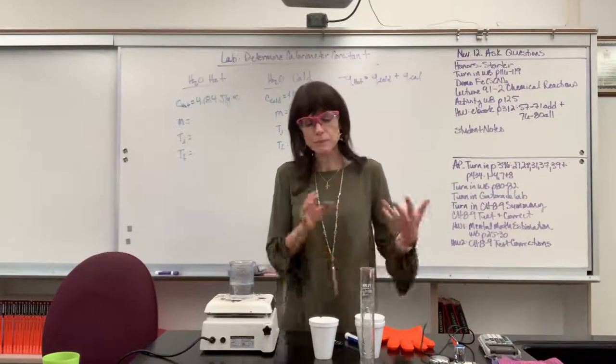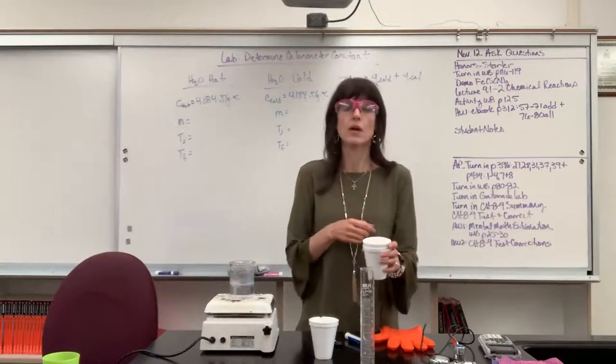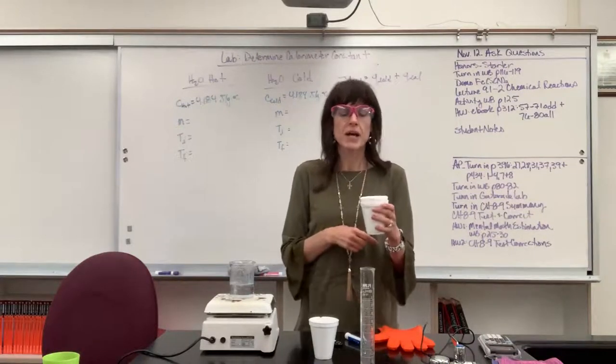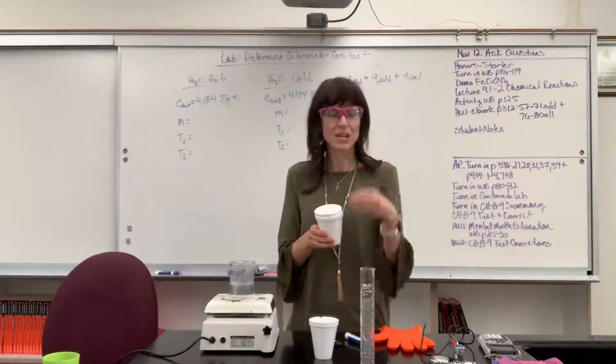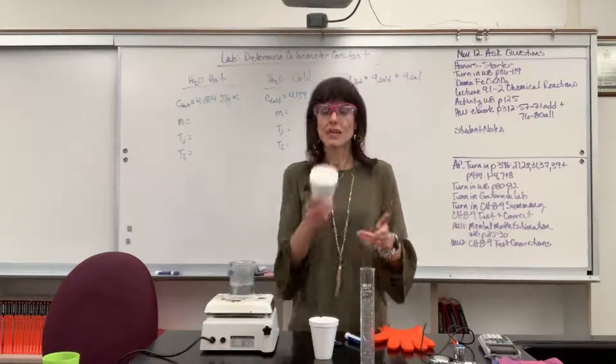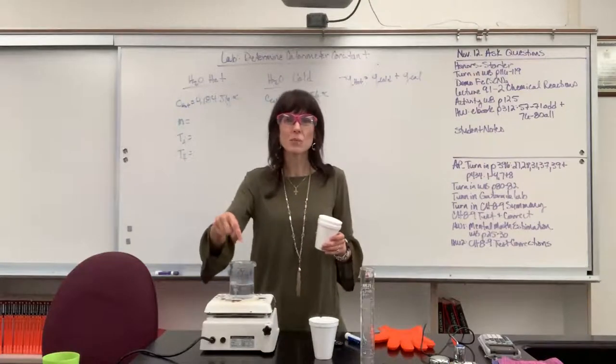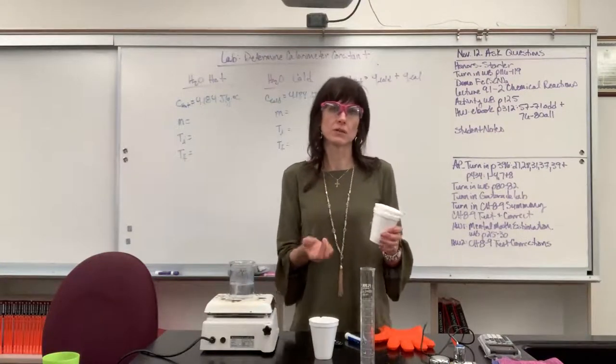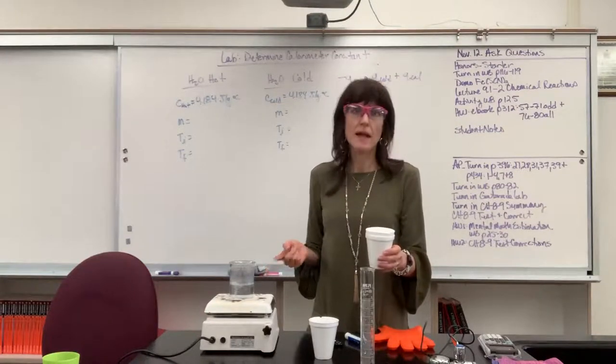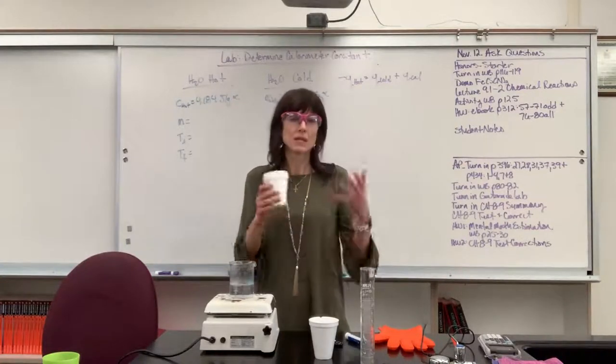So you're going to go into the lab and you'll be determining like the heat of solution. You'll be putting a salt into water. Or you're going to be determining the specific heat of a metal. You'll put a hot metal into the cold water. But in order to have accurate data, you need to first find the calorimeter constant. Now, another honest truth, it doesn't matter when you're in the lab, when you find the calorimeter constant. It's going to take a while for this to boil. And so say you're doing heat of solution, you're going to put some salt into the water. Start doing those experiments while you're waiting for this water to boil. And then at the end of the lab, that's when you can do your two trials of the calorimeter constant. So keep that in mind.